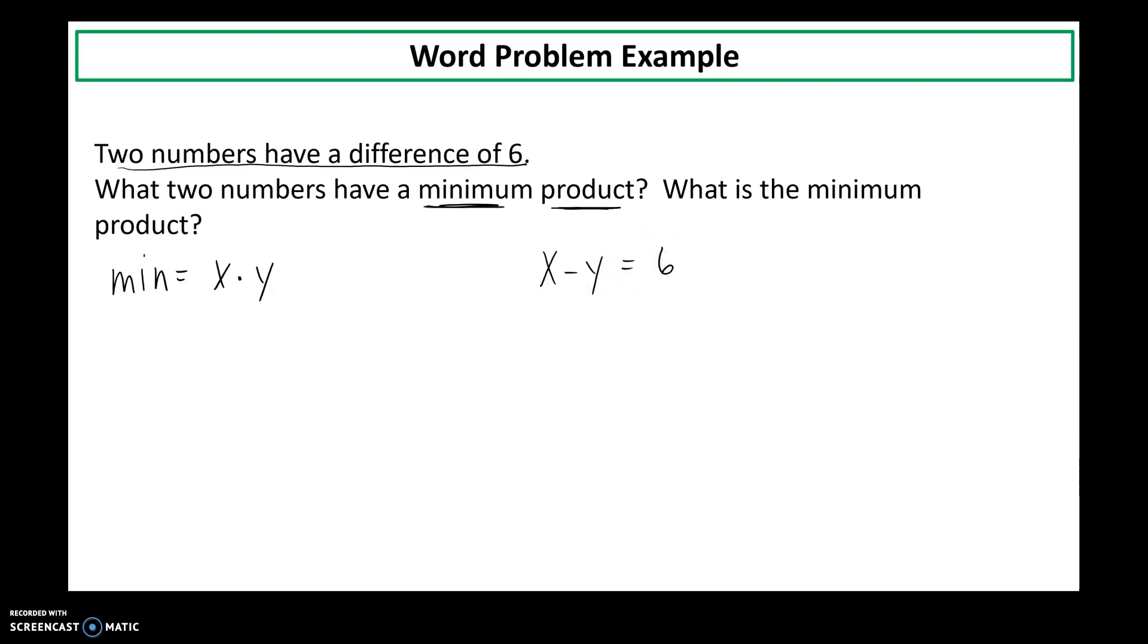So now look at what I'm able to do. I'm able to take my given information and I'm able to solve it for one of the variables. So I'm just going to solve for x by adding y to both sides. So now into my minimum equation, I can replace x with 6 plus y. So I took this and into my other equation, into the equation I'm attempting to minimize, I replaced it to be in terms of y. So now I'm going to distribute the y. Now I have a quadratic equation.